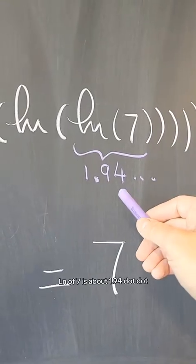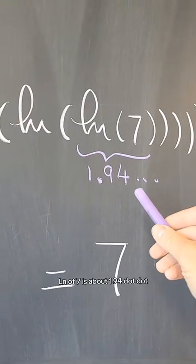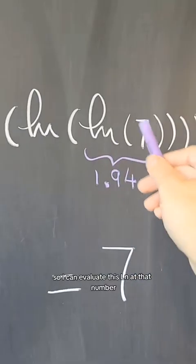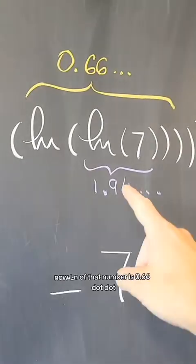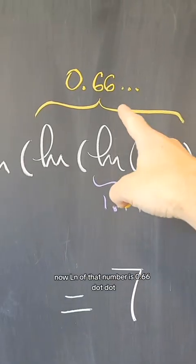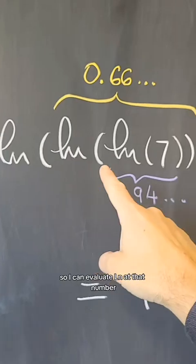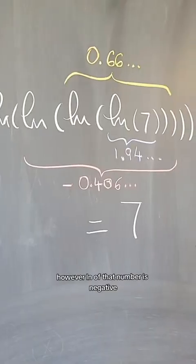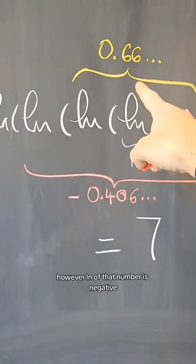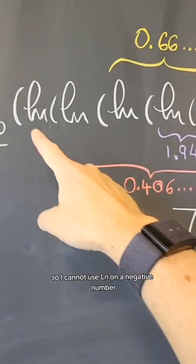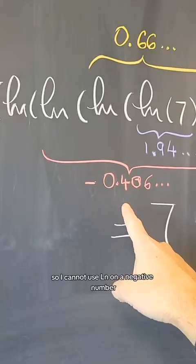ln of 7 is about 1.94. So I can evaluate this ln at that number. Now ln of that number is 0.66. So I can evaluate ln at that number. However, ln of that number is negative. So I cannot use ln on a negative number.